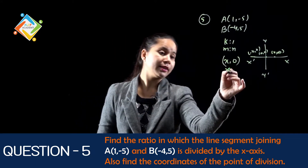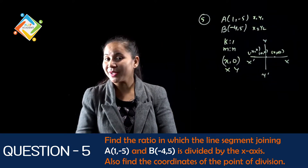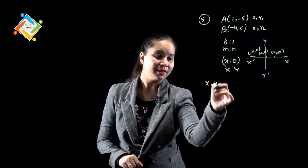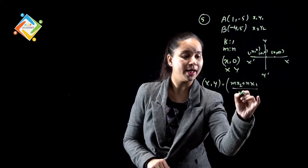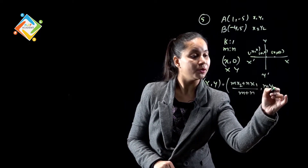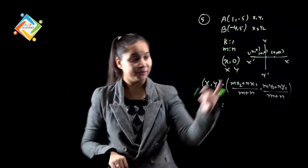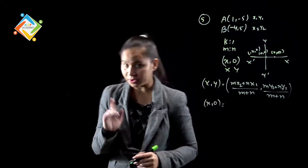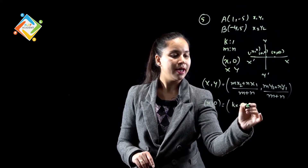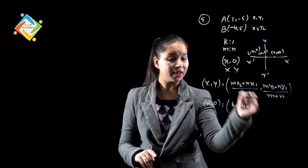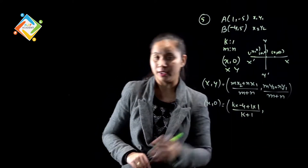Now, it is capital X and capital Y, and these are x1, y1 and x2, y2. On substituting the section formula: the section formula is x,y = (mx2 + nx1)/(m+n), (my2 + ny1)/(m+n). So x,0 — m की value k, x2 की value यहाँ से देखे minus 4, n की value 1, x1 की value 1, m+n याने k+1.